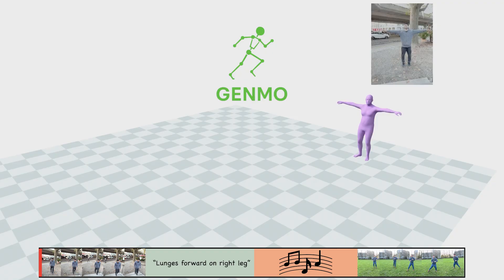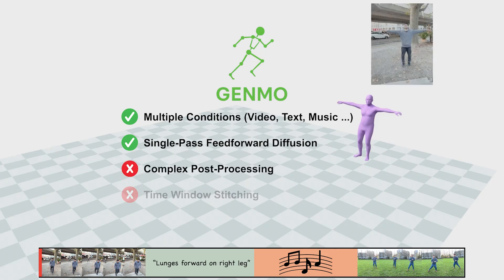Genmo can use 3D keyframes at different time intervals and generates multi-conditioned human motions in a single feedforward diffusion pass without requiring complex post-processing, time window stitching, or task-specific fine-tuning.